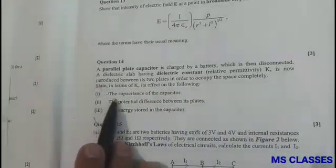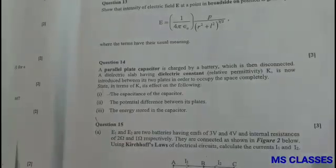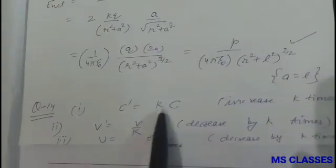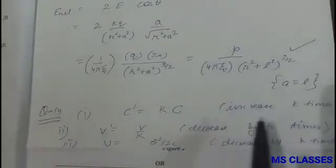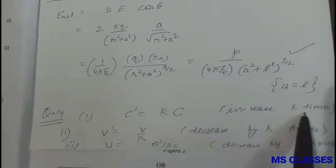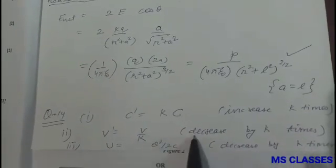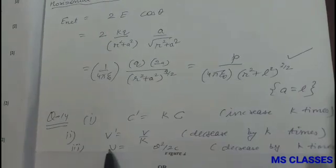First, how the capacitance gets affected? Now the new capacitance that becomes K times the initial capacitance, so it means that capacity will increase by K times. The potential will be reduced by K times.